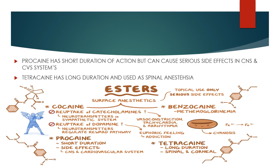Procaine has a short duration of action, but its potential to cause side effects — both in the central nervous system and in the cardiovascular system — is really high. Tetracaine has a long duration of action and is commonly used in spinal and corneal anesthesia.